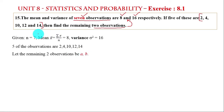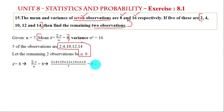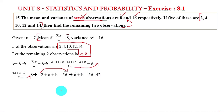Using the mean formula: x-bar equals summation x divided by n equals 8. We add all observations: 2 plus 4 plus 10 plus 12 plus 14 plus a plus b, divided by 7, equals 8. So 42 plus a plus b divided by 7 equals 8. Cross multiplying: 42 plus a plus b equals 56. Therefore a plus b equals 14.